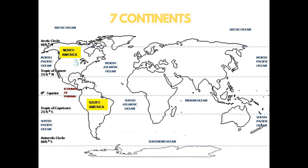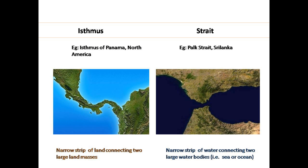Next comes North America. It's the third largest continent by size, bounded by the North Pacific Ocean, Arctic Ocean, and North Atlantic Ocean. The Arctic Circle and Tropic of Cancer pass through North America. This continent connects with South America through a narrow strip of land called the Isthmus of Panama. An isthmus is a piece of land that connects two large landmasses. Similarly, we have straits — a narrow strip of water that connects two large water bodies, for example, the Gulf Strait, Sri Lanka.